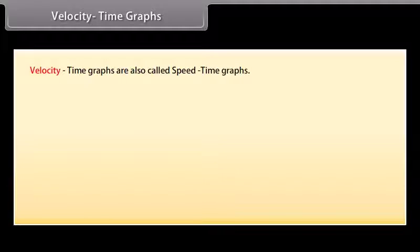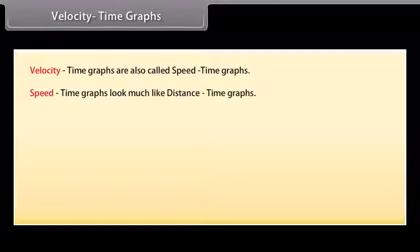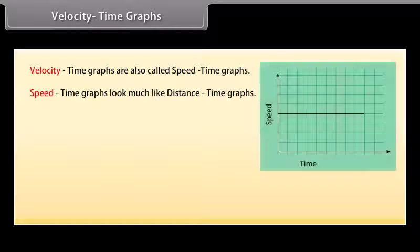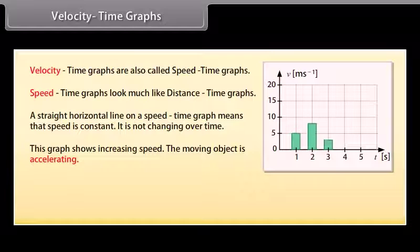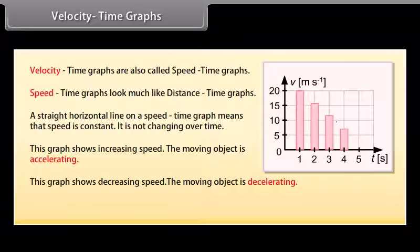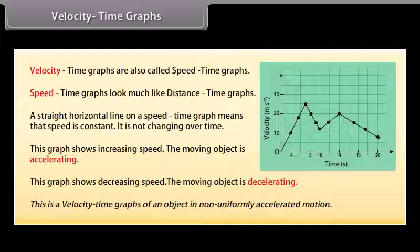Velocity-time graphs are also called speed-time graphs. Speed-time graphs look much like distance-time graphs. Time is plotted on the x-axis and speed or velocity on the y-axis. A straight horizontal line on a speed-time graph means speed is constant and not changing over time. An upward-sloping graph shows increasing speed — the moving object is accelerating. A downward-sloping graph shows decreasing speed — the moving object is decelerating. A curve represents an object in non-uniformly accelerated motion.